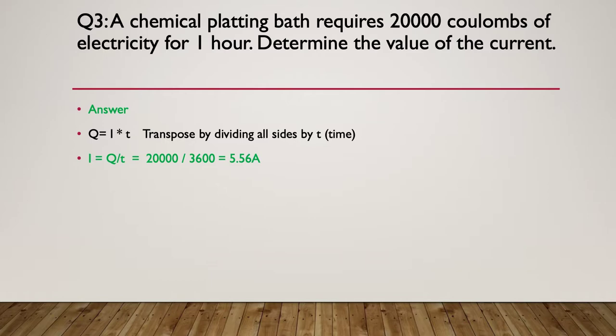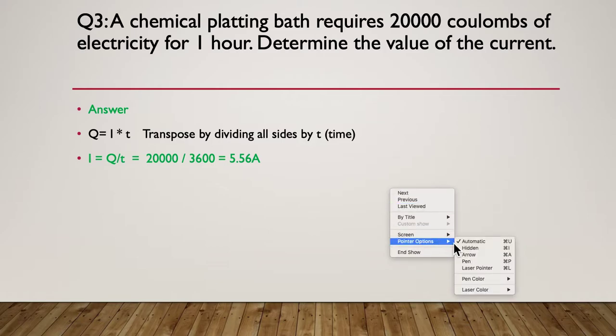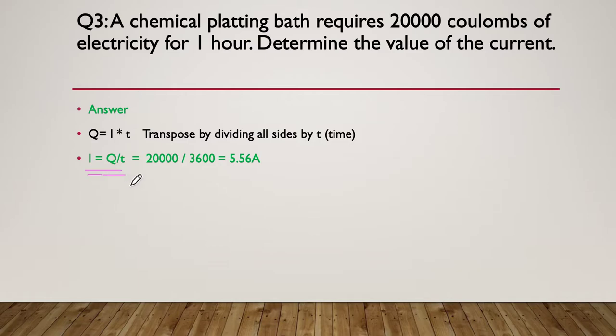And now let's move on to the answer. So the answer is Q equals I multiplied by T. So we transpose the equation by dividing both sides by time. Gives us the final equation of...